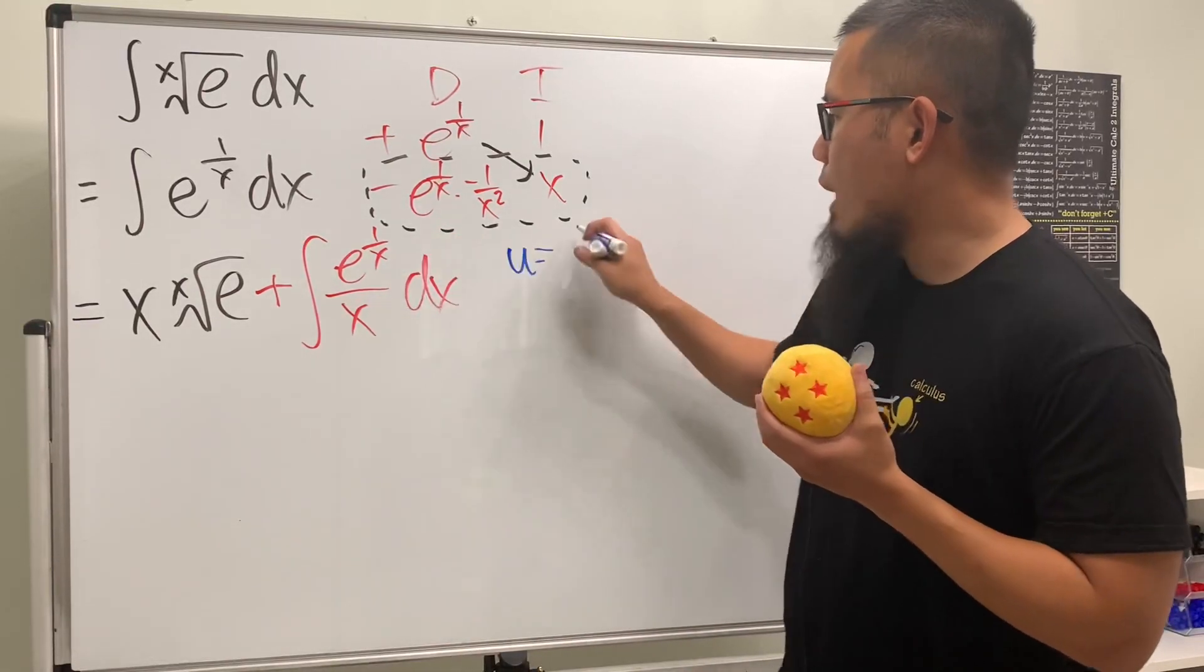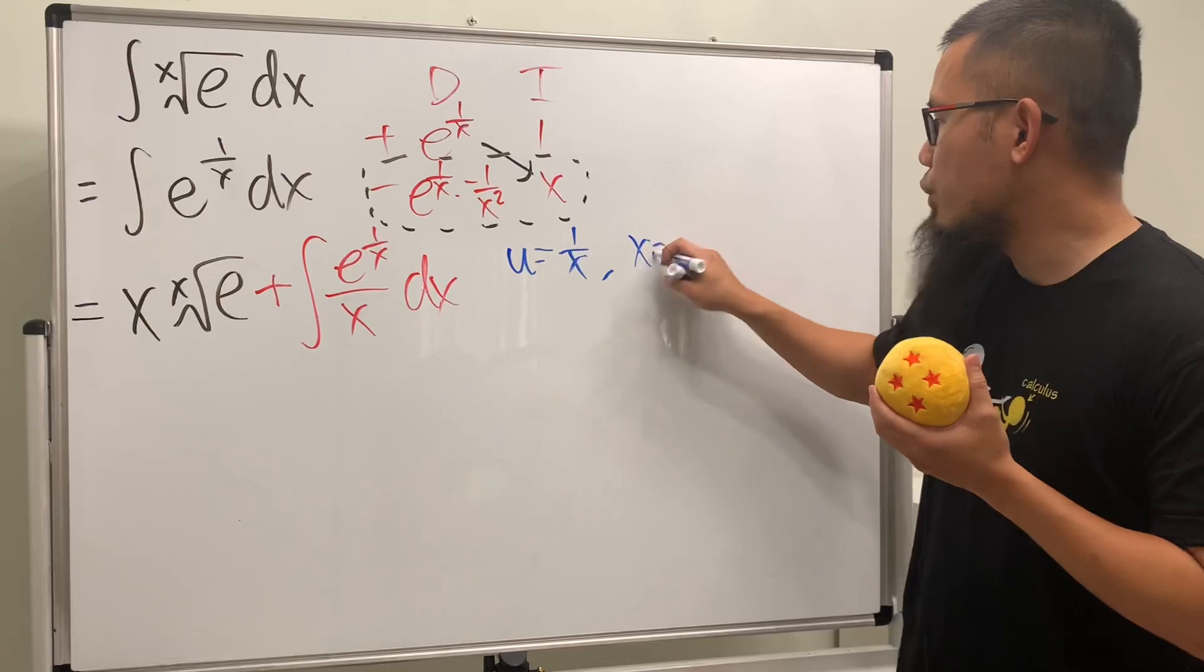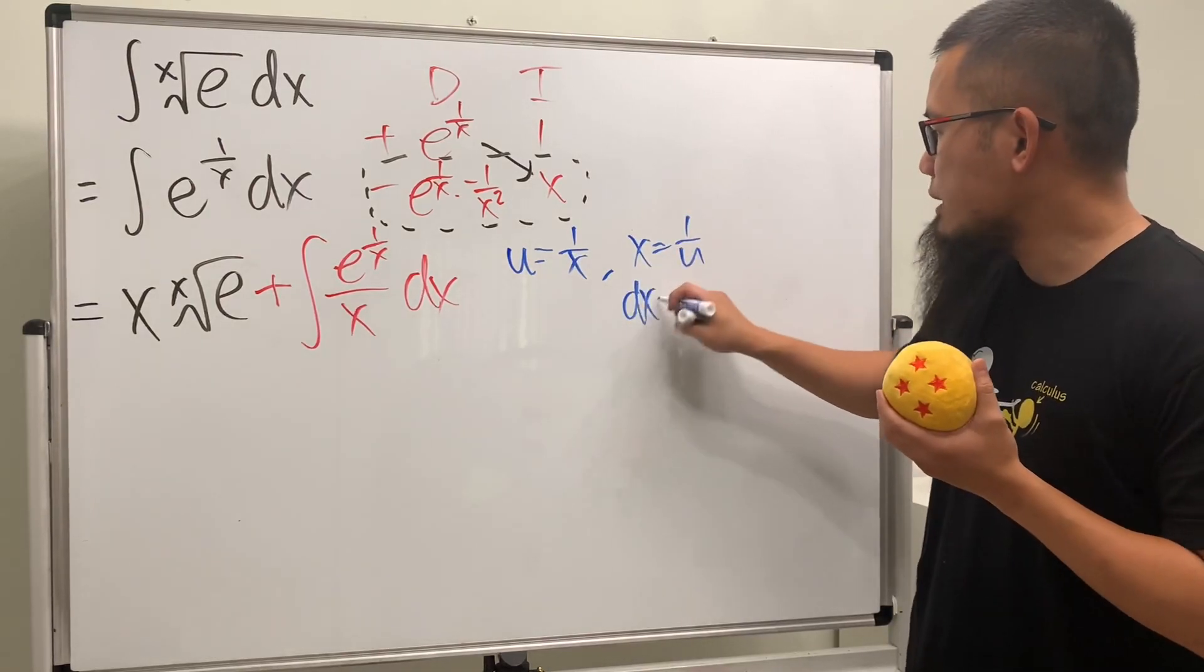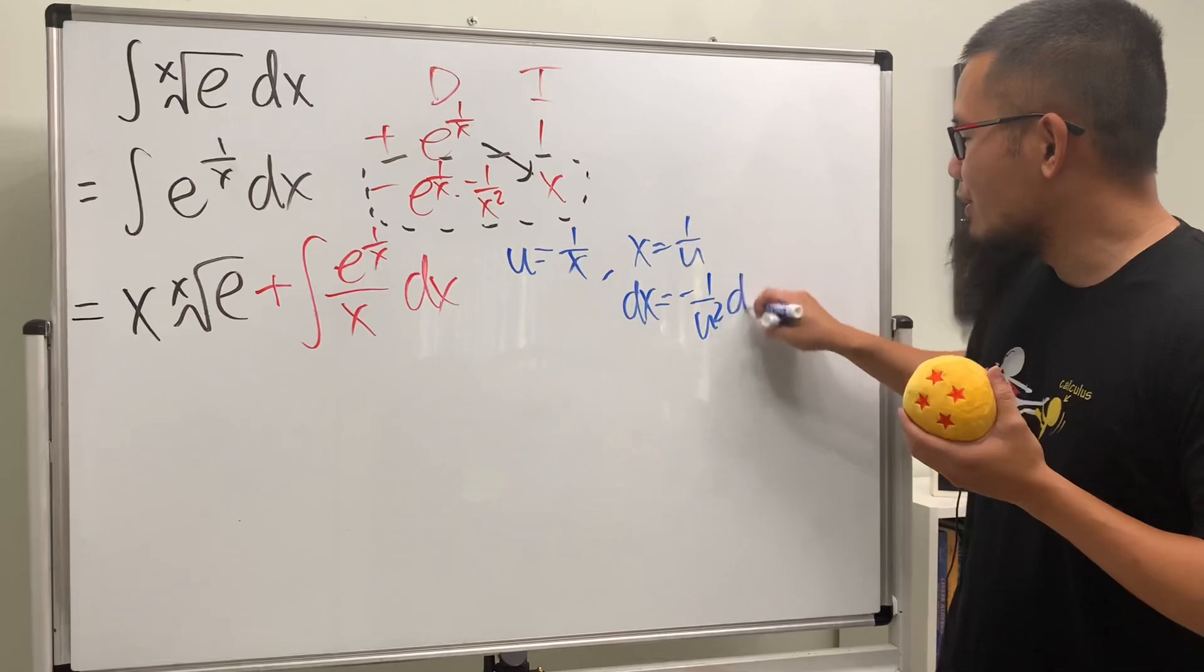So let's go ahead and put down u right here to be one over x. And that means x is equal to one over u. Differentiate both, so we get dx is equal to negative one over u squared du, like that. Very nice, huh?